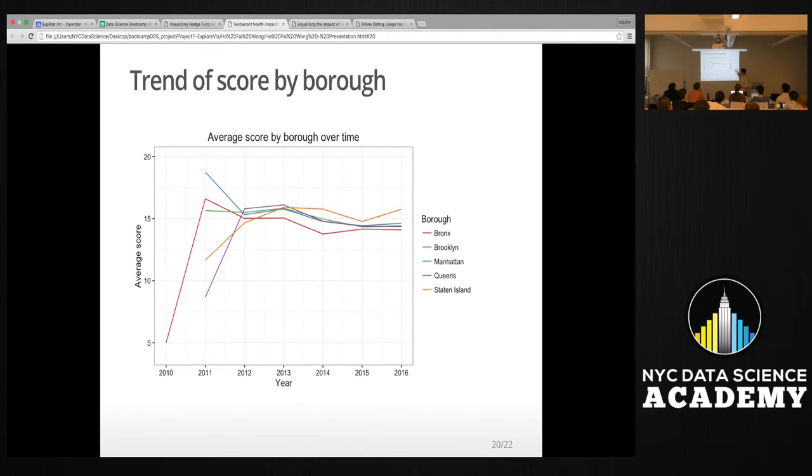So this is the trend of the scores by borough. I would ignore the beginning, probably because the government was like ramping up, they had a different standard in the beginning. Yeah, I could definitely see that happening. But you could see the average score by borough hasn't necessarily been improving, right? In fact, it's actually gone worse for Staten Island. Whoever lives there.